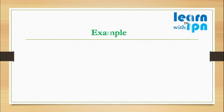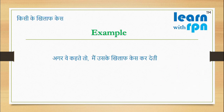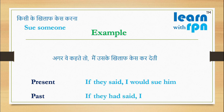Let's take examples. अगर वो कहते, तो मैं उसके खिलाफ केस कर देती. Here is an action — किसी के खिलाफ केस करना — it means to sue someone. For present feeling, please say: If they said, I would sue him. For past feeling, please say: If they had said, I would have sued him.